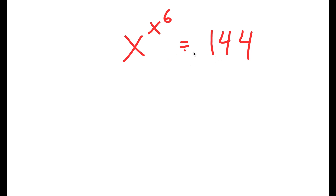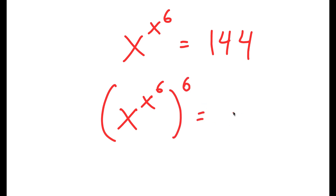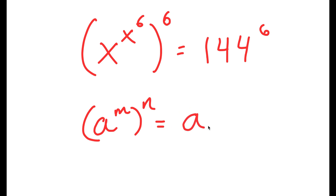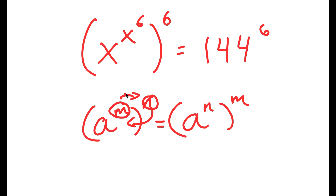You might be thinking: why do we need to take another power when there's already two powers here? The reason is that if I have something in the form a to the power of m to the power of n, this is the same thing as a to the power of n to the power of m — meaning I can switch the places of these exponents.